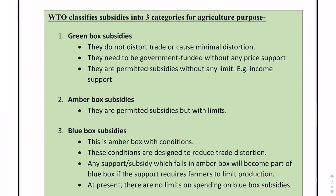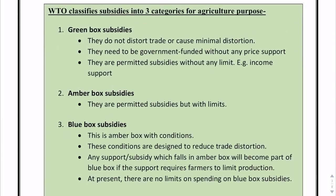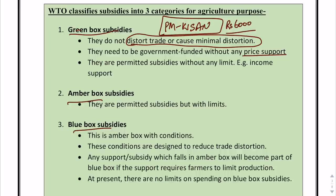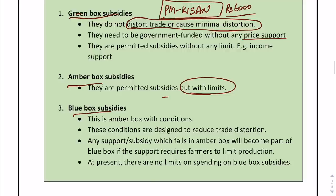WTO classifies subsidies into three boxes: green, amber, and blue. Green box subsidies, for example, include PM Kisan — that is why this particular topic becomes important. PM Kisan provides direct income support of Rs. 6,000 per year to farmers and is a green subsidy because it does not distort trade or production; it simply incentivizes farmers. Amber box subsidies are permitted but have limits, and blue box subsidies fall under amber with more conditions.